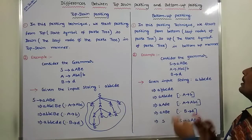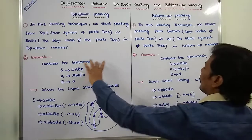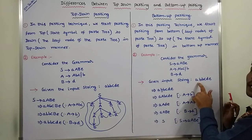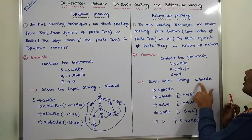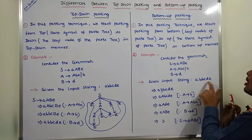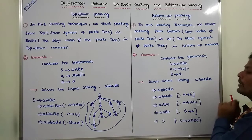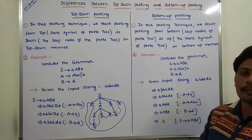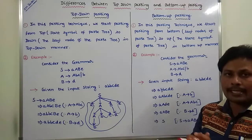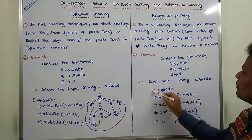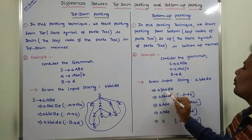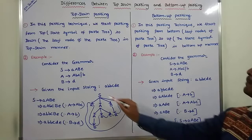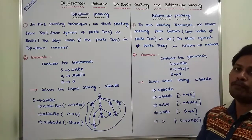Consider the same grammar. The given input string is: small a, small b, small b, small c, small d, small e. We are taking the given input string first, and from this input string, we have to derive the start symbol of the parse tree.